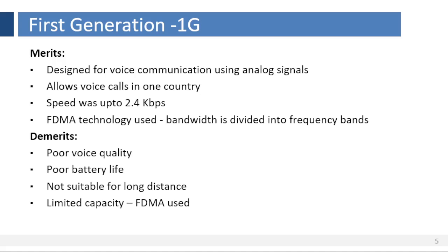Merits of first generation: 1. Designed for voice communication using analog signals. 2. Allows voice calls within one country. 3. Speed was up to 2.4 kilobytes per second. 4. FDMA technology used — bandwidth is divided into frequency bands.